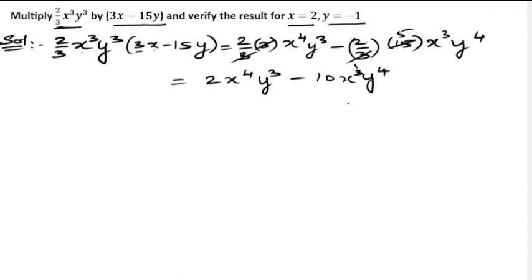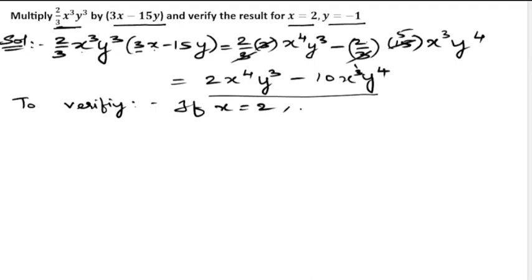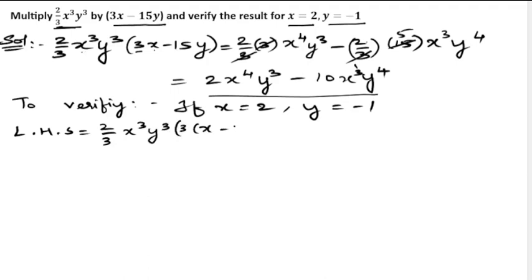Whatever we got is the RHS, and the original expression is the LHS. To verify, we substitute x = 2 and y = −1. Let us substitute in LHS first. LHS is 2/3 x³y³ × (3x − 15y).